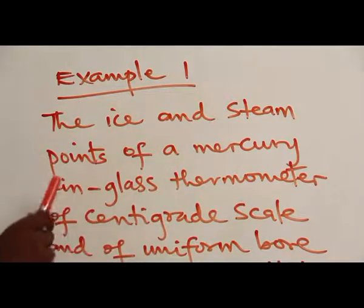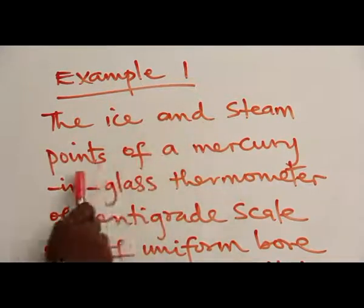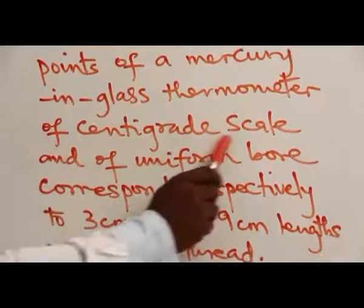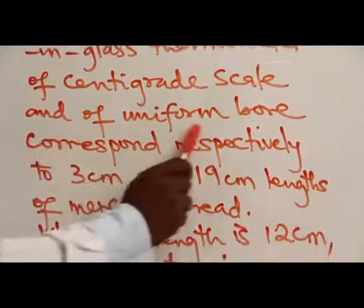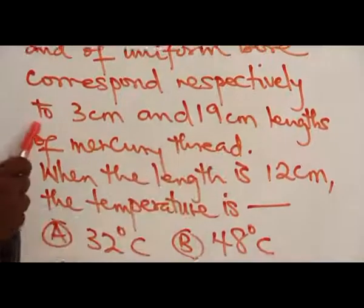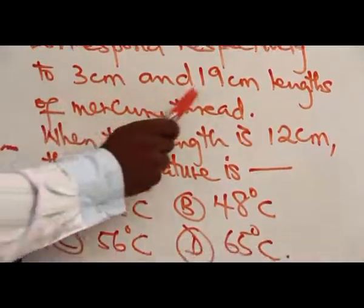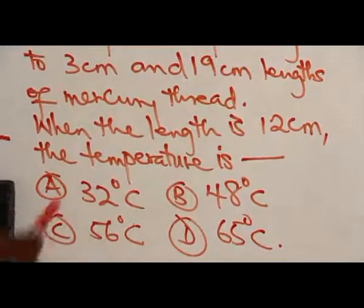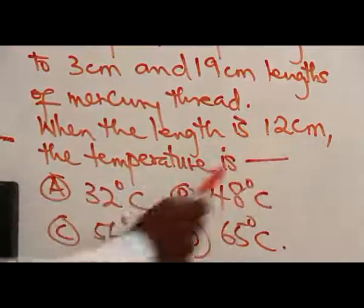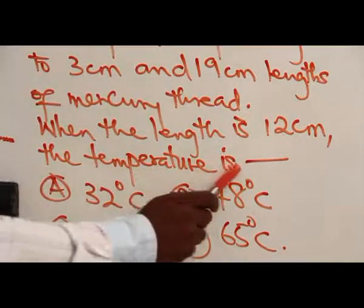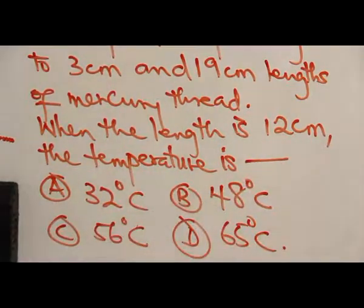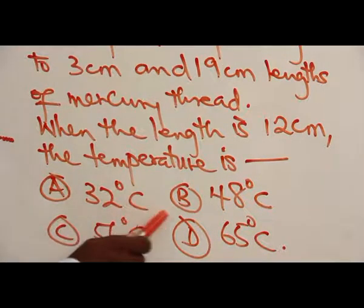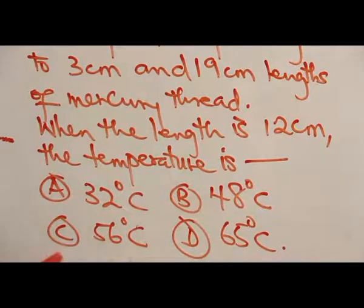Example 1: The ice and steam points of a mercury-in-glass thermometer of centigrade scale and uniform bore correspond respectively to 3 cm and 19 cm lengths of mercury thread. When the length is 12 cm, the temperature is: A. 32°C, B. 48°C, C. 56°C.